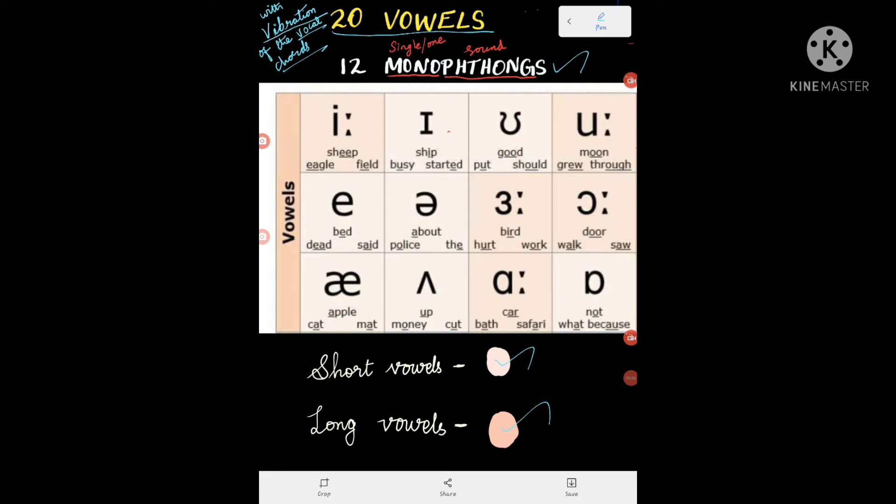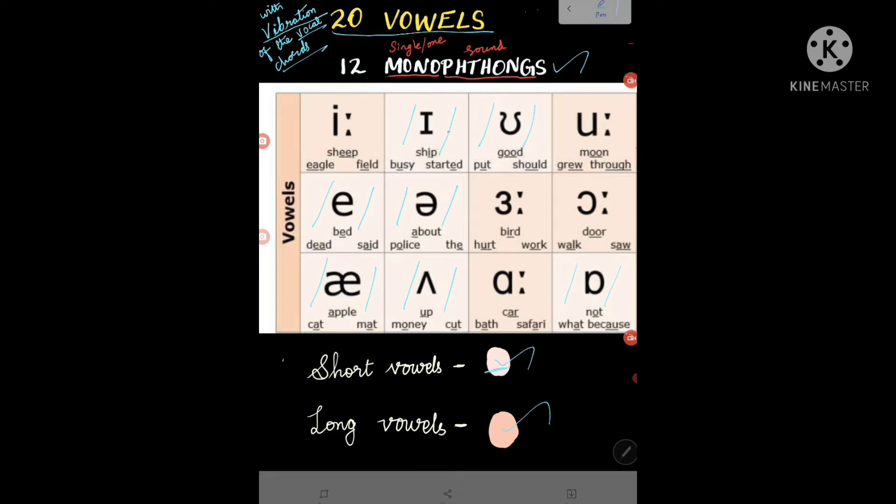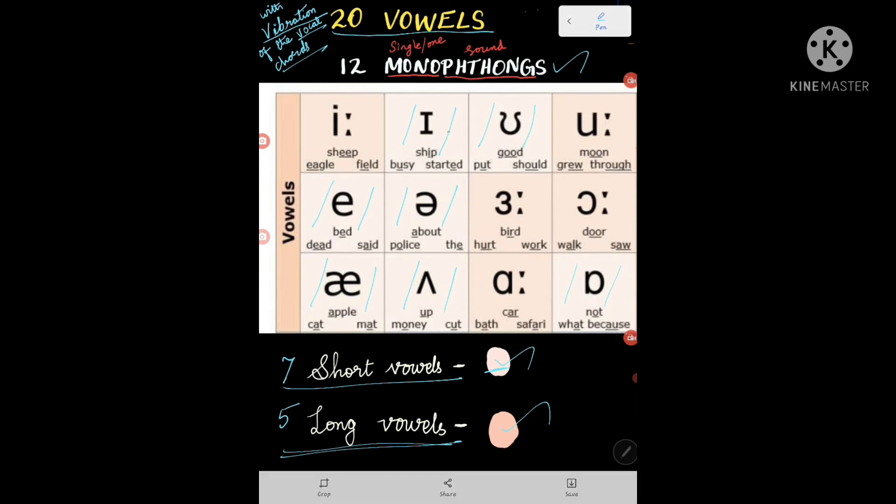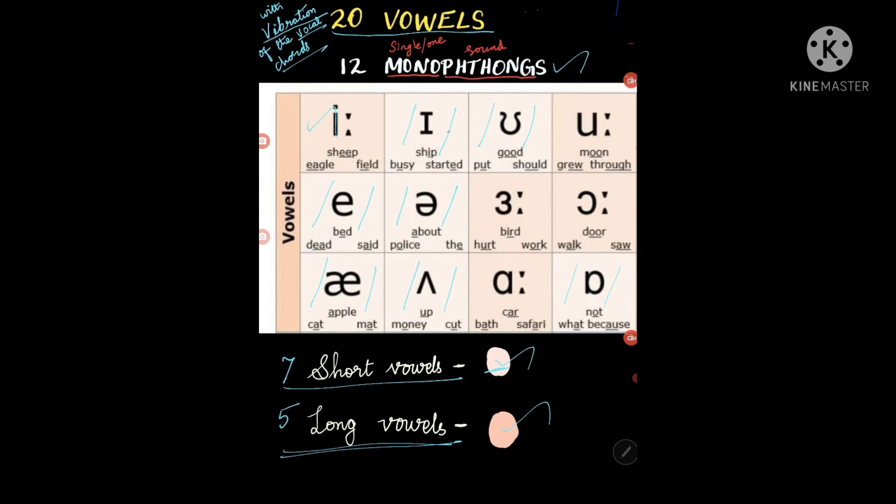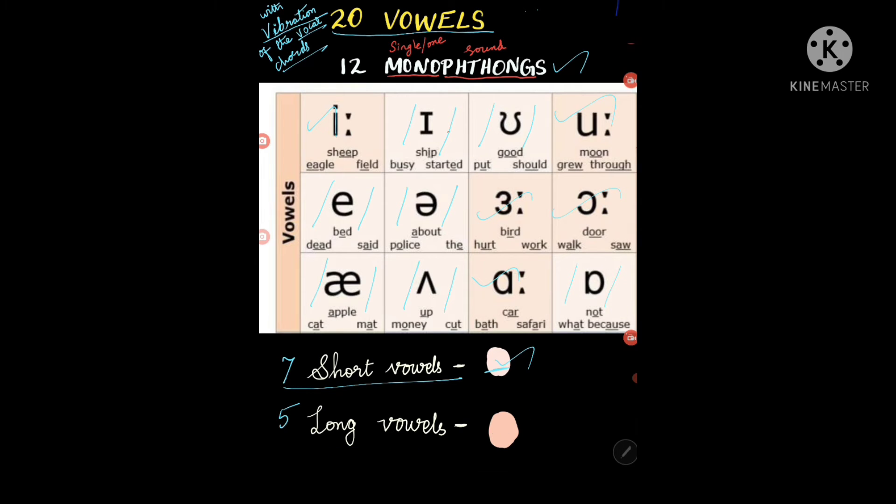Short vowels are in this light color. You have one, two, three, four, five, six, seven short vowels, and the remaining five are long vowels. See this: one, two, three, four, five. These are long vowels.